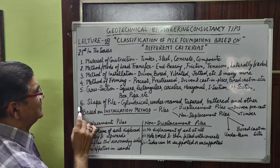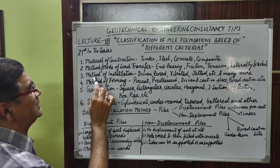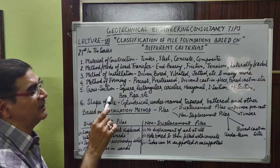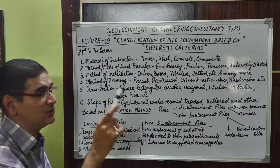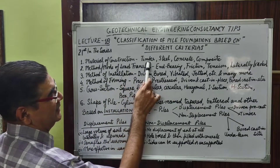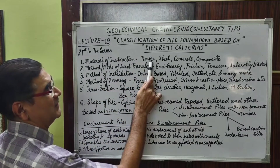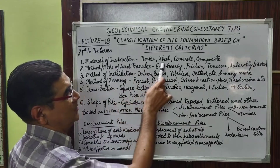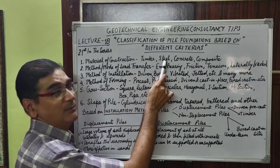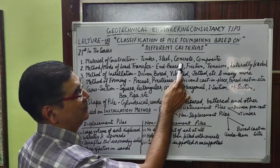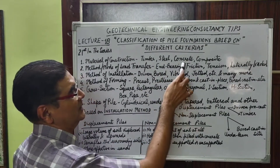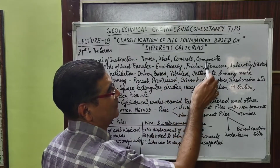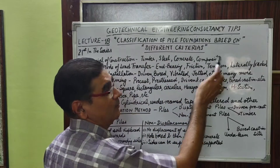The first criterion is the material of construction — of which material the pile is being constructed. If it is a wooden pile it is termed a timber pile; if you are using steel boxes or pipes it is termed a steel pile; if you are using concrete it is known as a concrete pile; and if you are using both steel and concrete it is termed a composite pile.